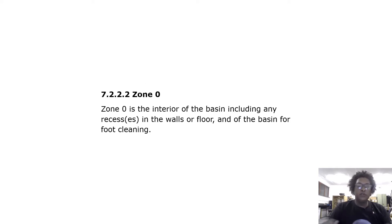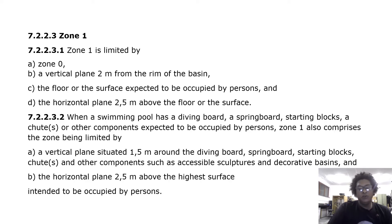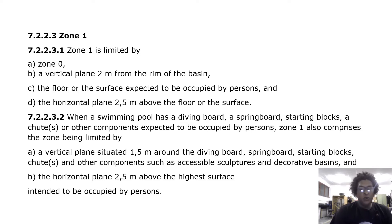Zone 0 is the interior of the basin, including any recess in the walls or floor of the basin, for foot cleaning. Zone 1 is limited by zone 0, a vertical plane 2 meters from the rim of the basin, the floor or surface expected to be occupied by persons, and the horizontal plane 2.5 meters above the floor or surface.